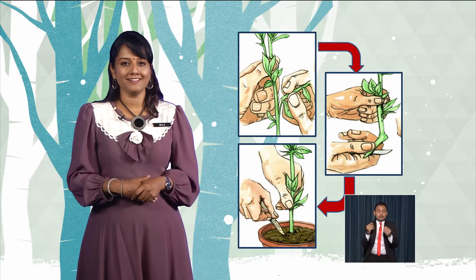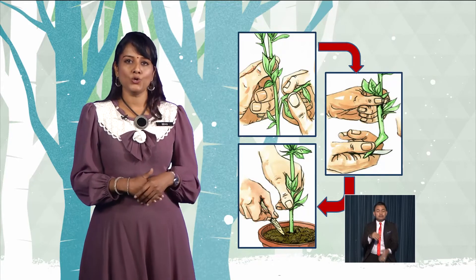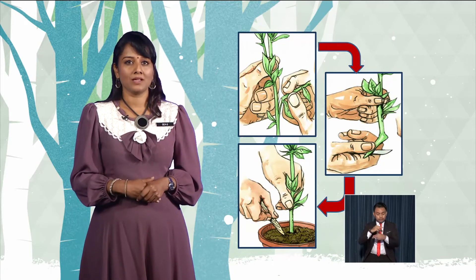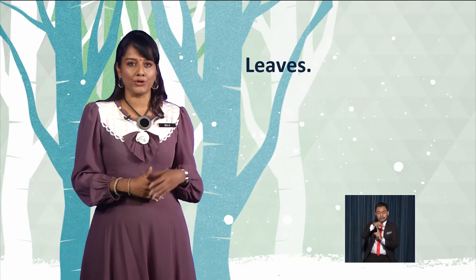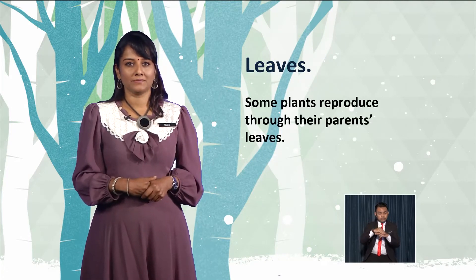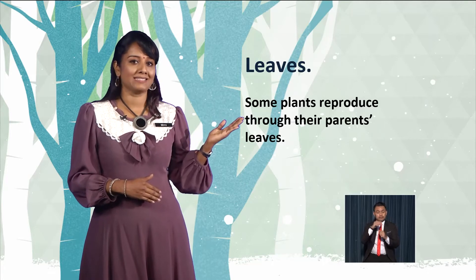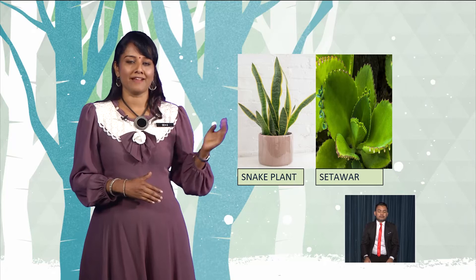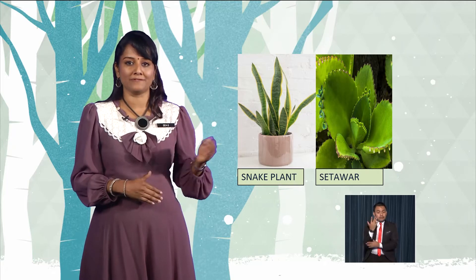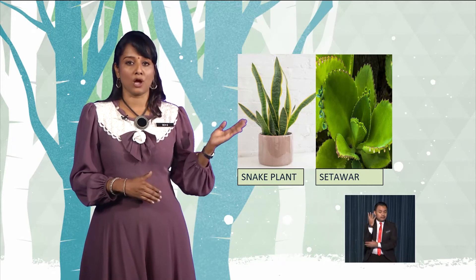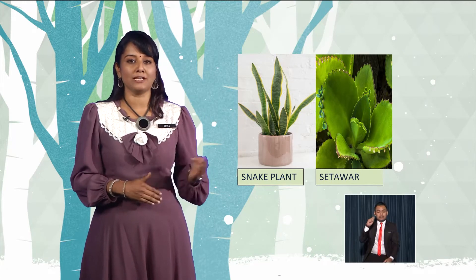Boys and girls, plants also reproduce through leaves. Some plants reproduce through their parent's leaves. Let's look at some examples of plants that reproduce through leaves — the snake plant and the setawar, or bryophyllum.